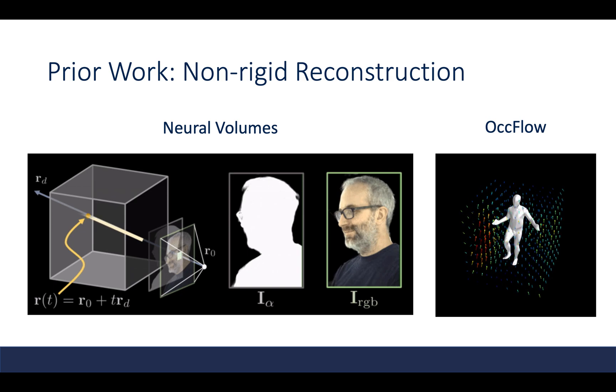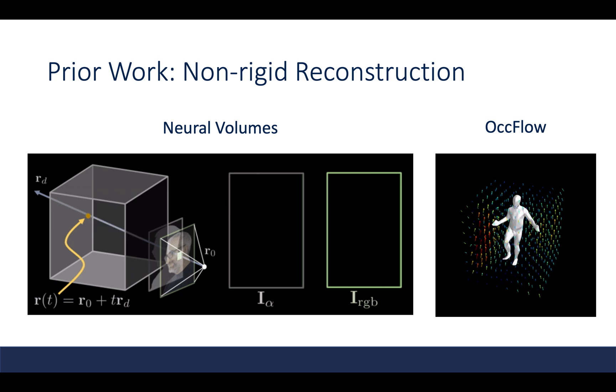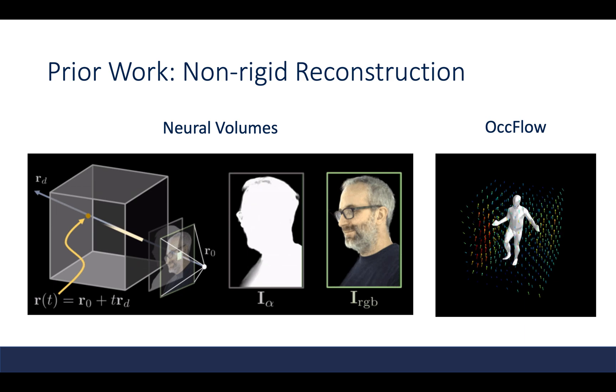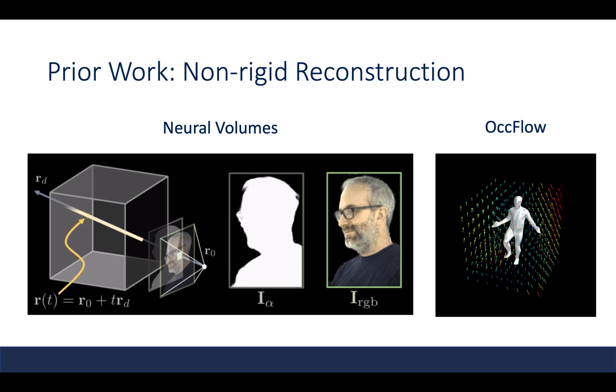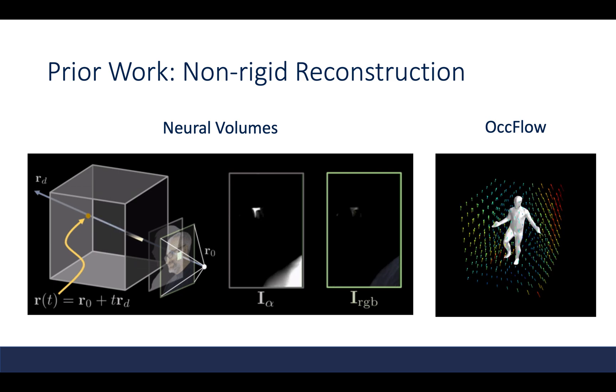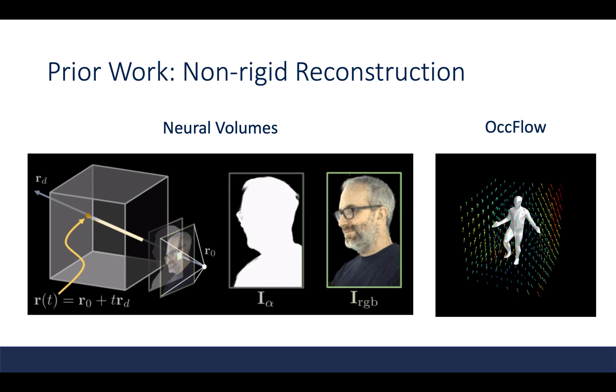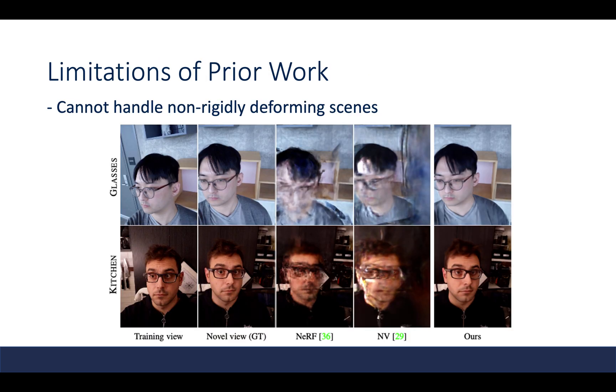Prior work on non-rigid reconstruction includes two main methods: neural volumes and OccFlow. Neural volumes use a 3D representation of a deformable scene using a voxel grid and warp field, while OccFlow uses a flow field to represent 3D human motion over time using an ordinary differential equation. However, these methods cannot handle non-rigidly deforming scenes, as shown in the examples in the third and fourth columns.